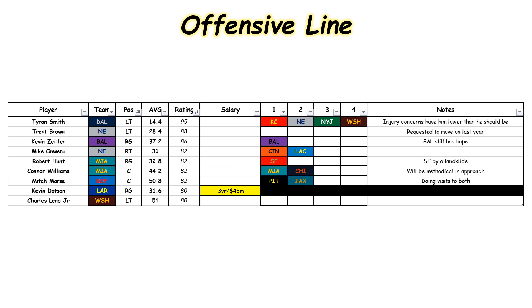Let's start with the offensive line. To the left you're going to see the player, next would be his 2023 NFL team, and then his exact position. To the column to the right you're going to see average, which basically means his average ranking according to some of the top sites — ESPN, CBS Sports — we averaged their free agency ranking. So Tyron Smith would be ranked the 14th best available free agent on the market this season.